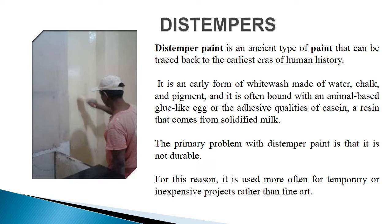Distemper paint is an ancient type of paint traced back to the earliest eras. It is an early form of whitewash made of water, chalk and pigment, often bound with animal-based glue such as casein resin from solidified milk. The primary problem with distemper paint is that it is not durable, so it is used more often for temporary or inexpensive projects rather than fine art.